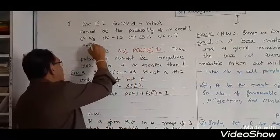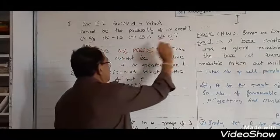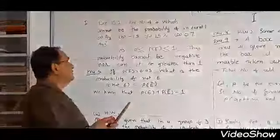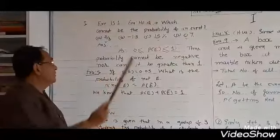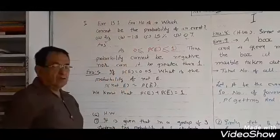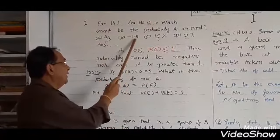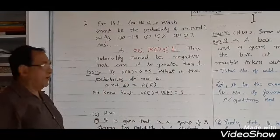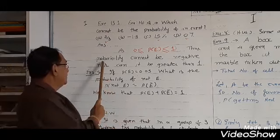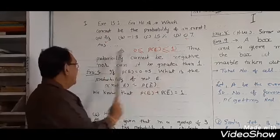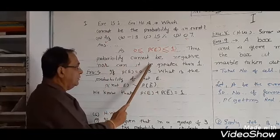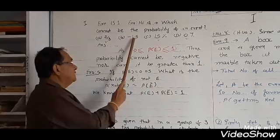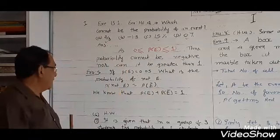That is, probability lies between 0 and 1. 15% equals 15 upon 100, which lies between 0 and 1. So, minus 1.5 is negative and a negative value cannot be the probability of any event. Probability cannot be negative nor can it be greater than 1. So, our answer is minus 1.5.